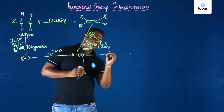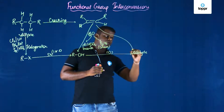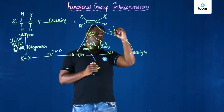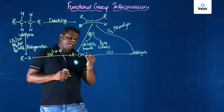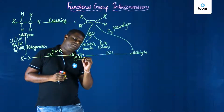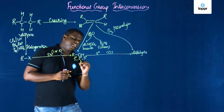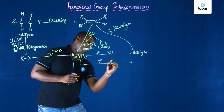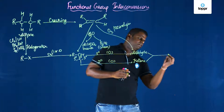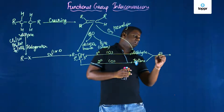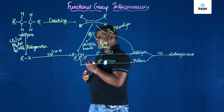This alcohol on oxidation gives an aldehyde. Similarly, this alkene on ozonolysis also gives an aldehyde or ketone depending on the substrate. Primary alcohol gives an aldehyde; secondary alcohol on oxidation gives a ketone. Both aldehyde and ketone on further oxidation give carboxylic acid. Aldehydes on reduction give alcohol back; ketones on reduction give a secondary alcohol.